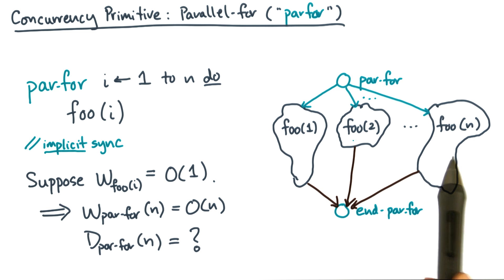Now in theory, if all these foos have constant cost, then you would think that the span is basically a constant. But in practice, what you should expect to see is that the span will actually grow with n, especially when n is really big.